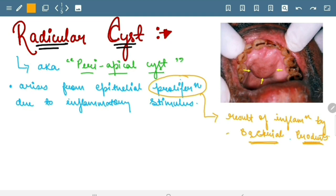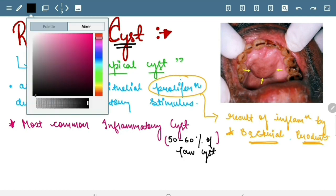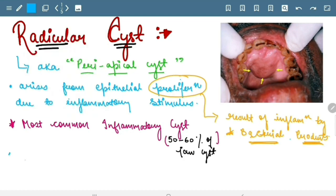Okay, it is most common inflammatory cyst. Okay, approximately 50 to 60% of jaw cysts. Its lining is derived from epithelial cell rests of Malassez.